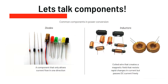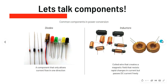Diodes and inductors are the next components. A diode is a component that only allows current flow in one direction — an LED is an example of a diode. Inductors are a coiled wire that creates a magnetic field that resists rapid changes in current but freely passes DC. Because direct current stays constant, it passes through freely. But if you pass an AC signal through an inductor, it will choke it out because it does not like the change from positive peaks to negative peaks.